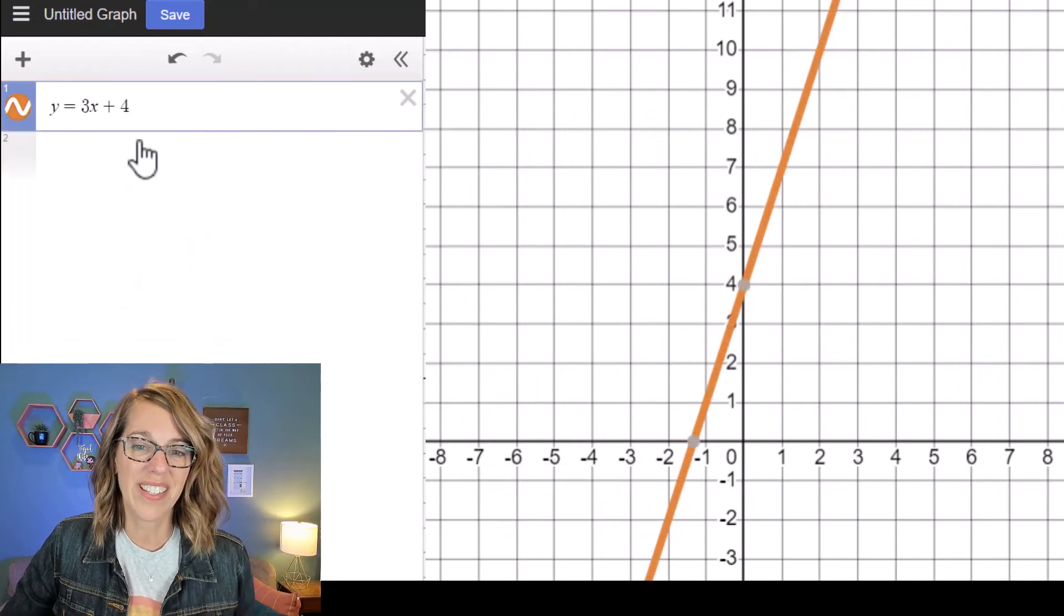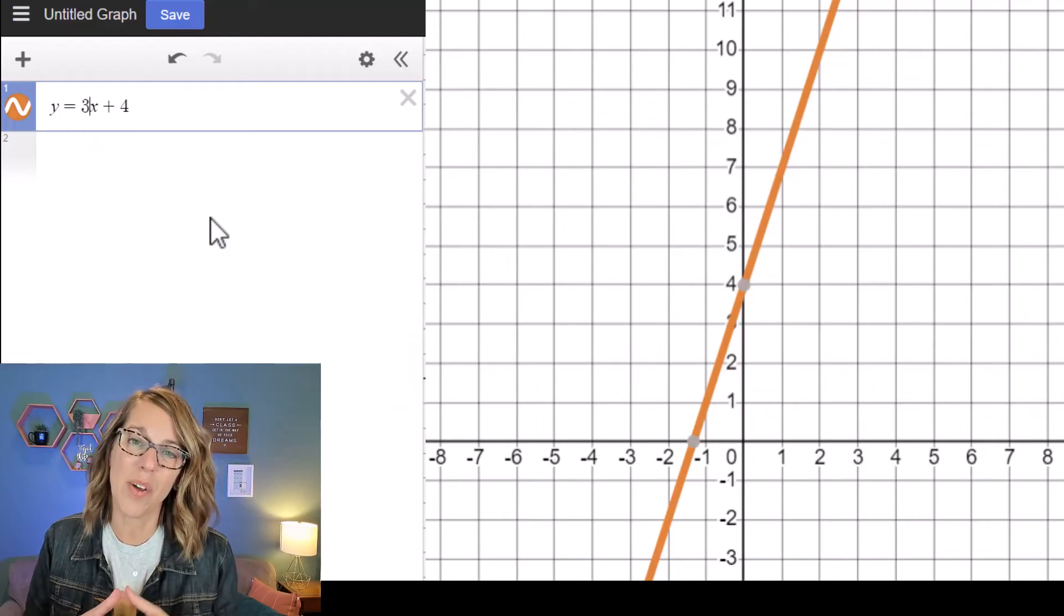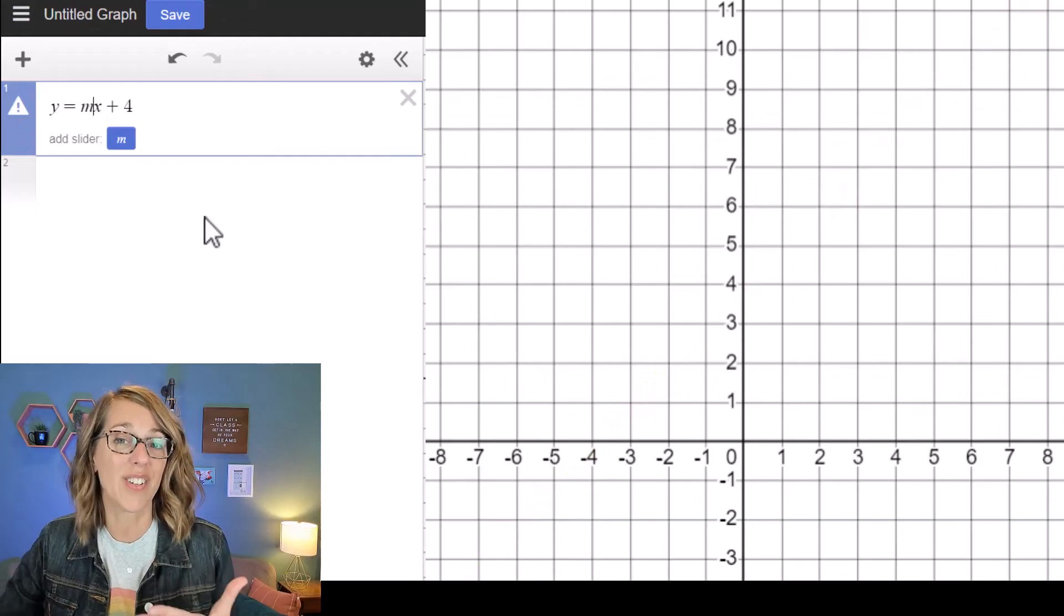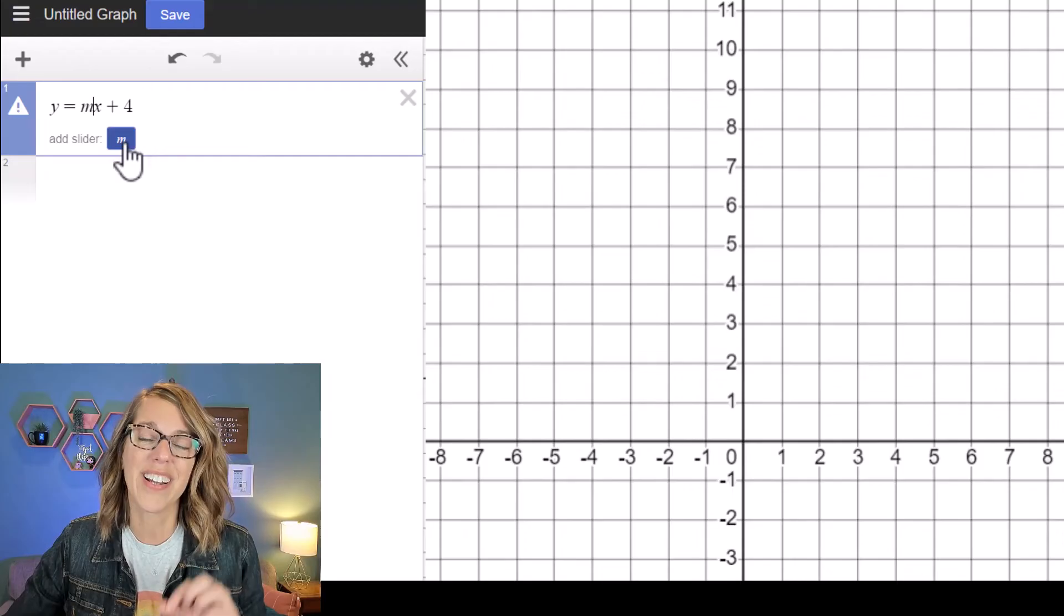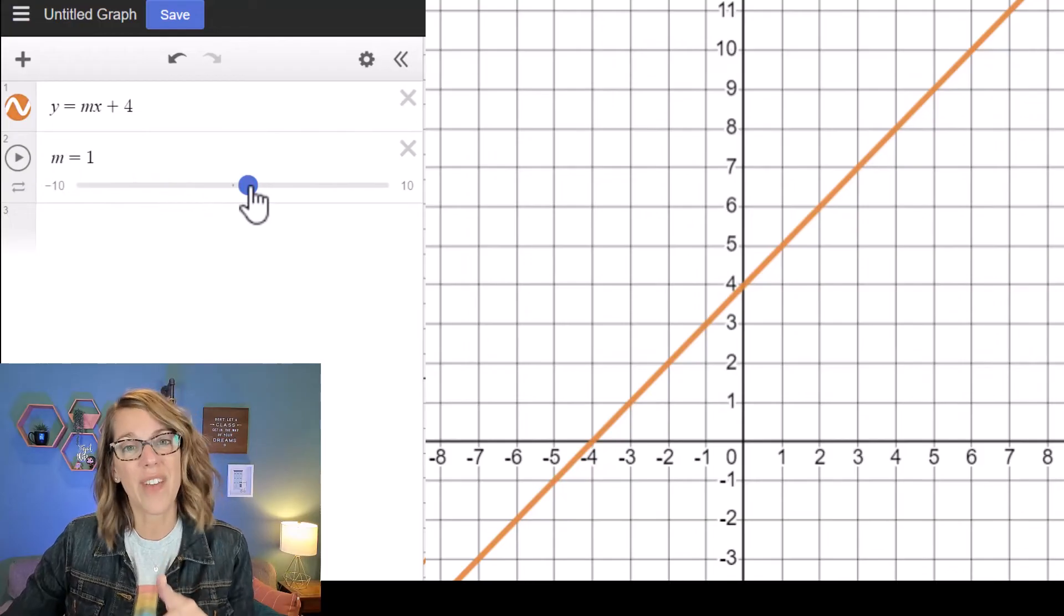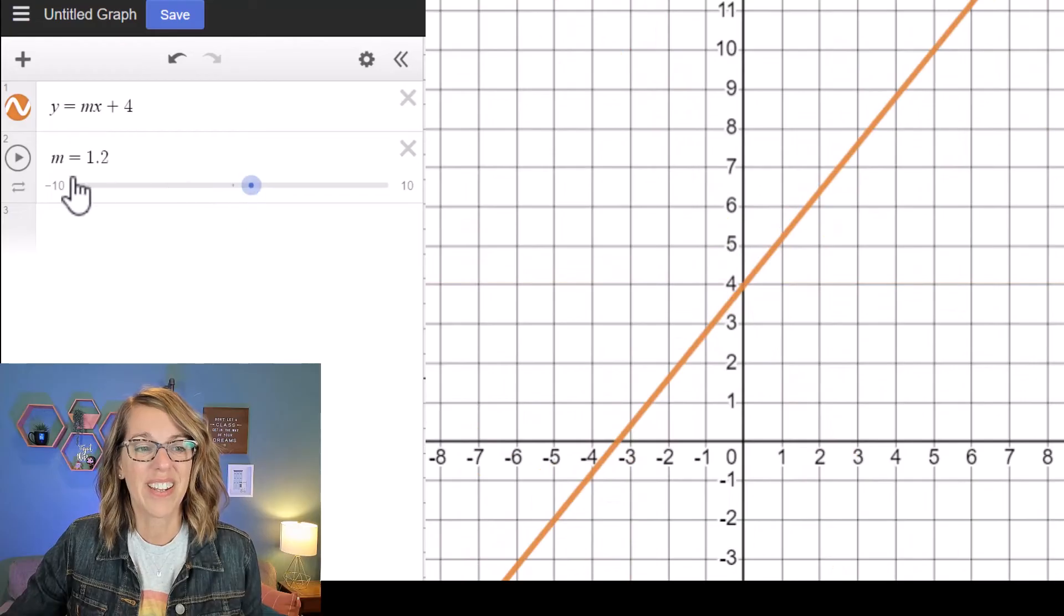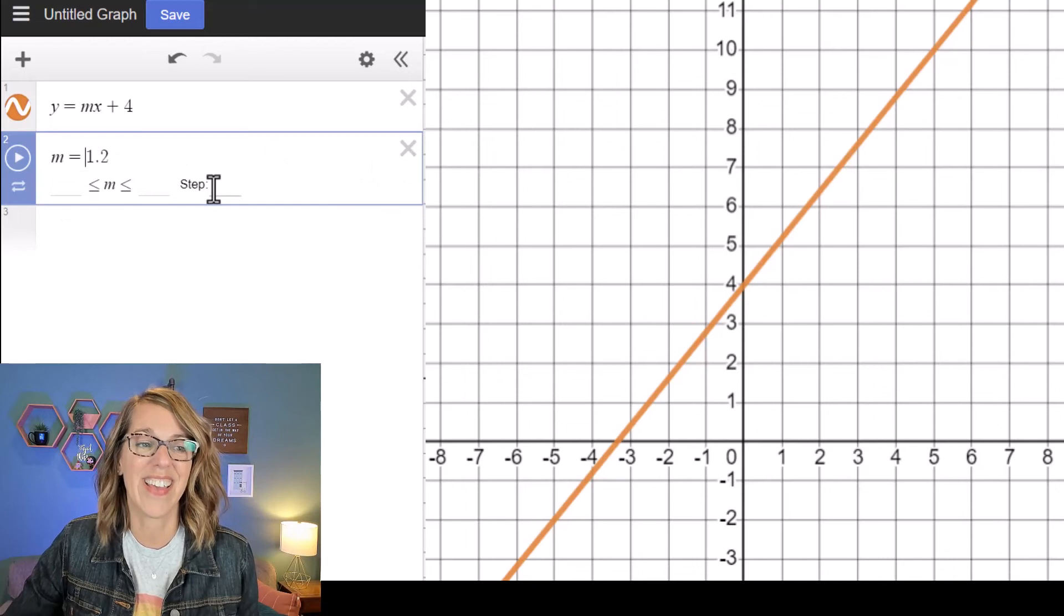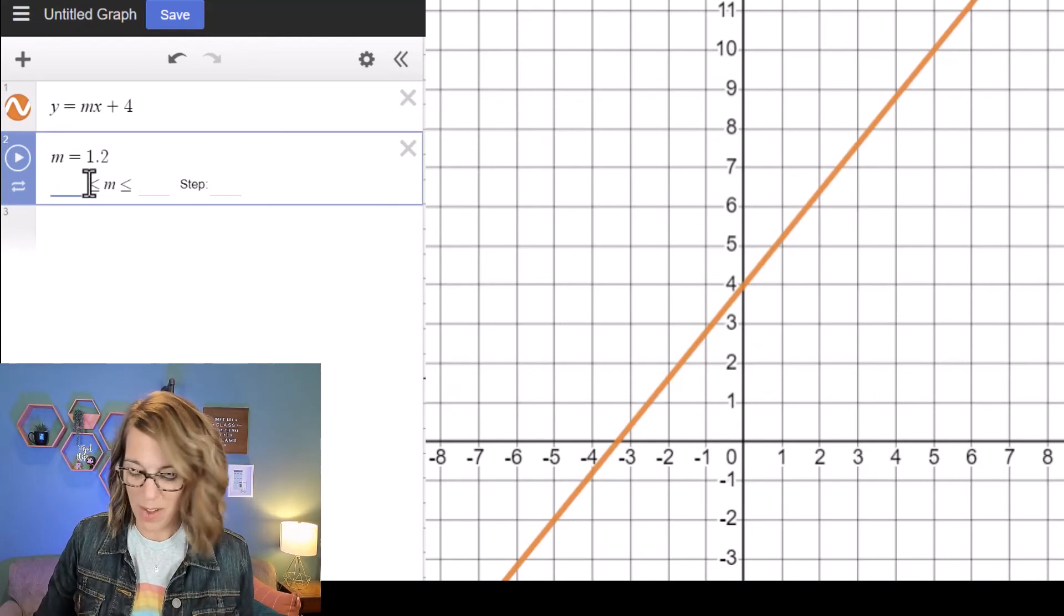Let me click off of this and I want to change my graph so it's interactive. Instead of having the slope fixed at 3, I'm going to put an M out in front to designate our slope. It automatically doesn't recognize it, so it wants to know if you want to add a slider, and I definitely want to add a slider here. So it's giving me the option now to change the value of M from negative to positive, and it set up my values to be from negative 10 to 10. If I click on that M equals 1.2, I can also change what my bounds are.